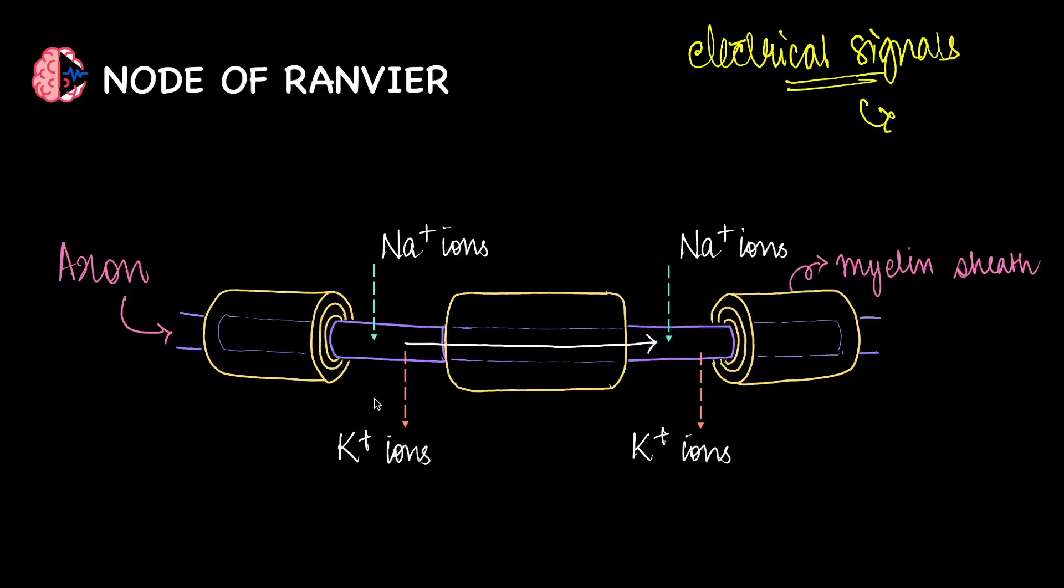Now if electrical signals arise due to the difference of sodium and potassium ions, then this movement at the nodes sort of re-energizes the impulse. Which is why you can think of this node of Ranvier as a mini charging station. Where at each node, sodium and potassium ions move in and out, that creates little bursts of electrical charge.